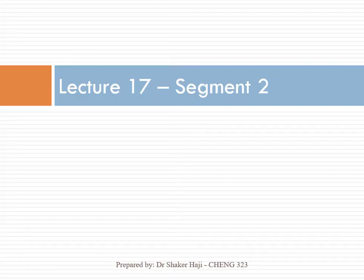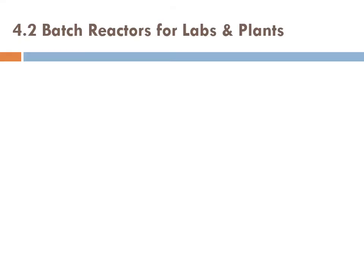Here we are discussing segment 2 of lecture 17. In segment 1, we developed the 5-step algorithm to design a reactor. In this segment, we're going to talk about batch reactors for labs and plants, and we're going to apply the 5-step algorithm to the design of a batch reactor.